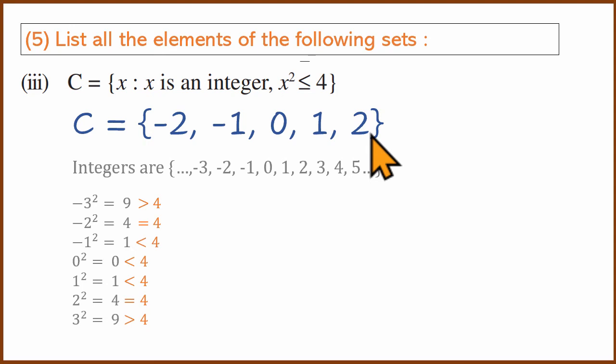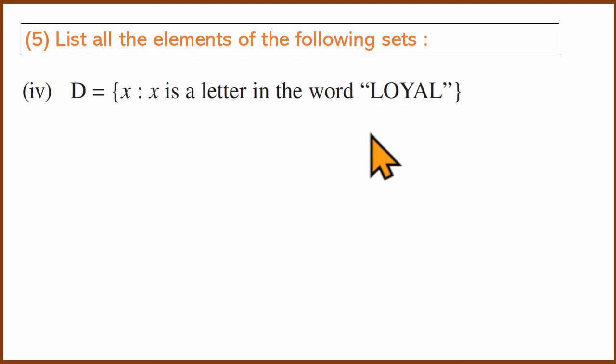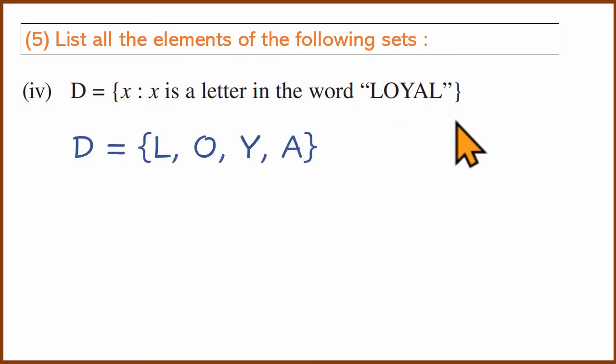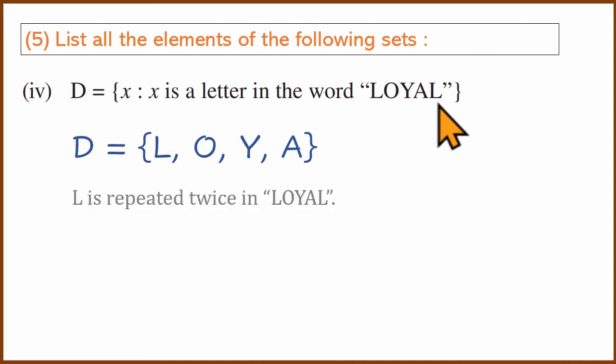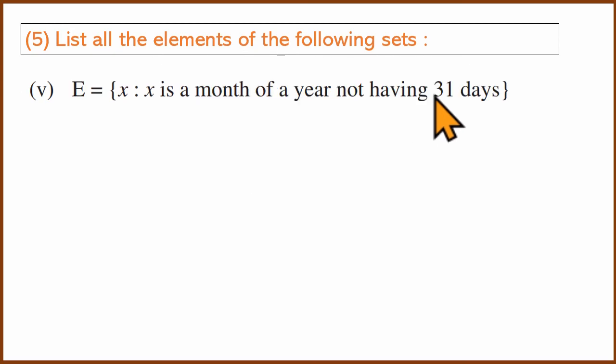Next: x is a letter in the word LOYAL. In a set, elements are not repeated — so the last L is not repeated. The set is {L, O, Y, A}. Also: x is a month of a year not having 31 days.